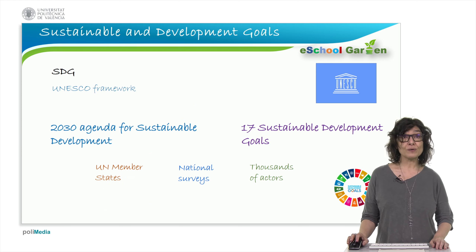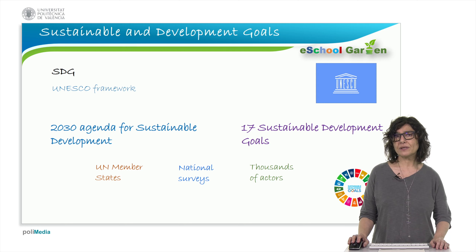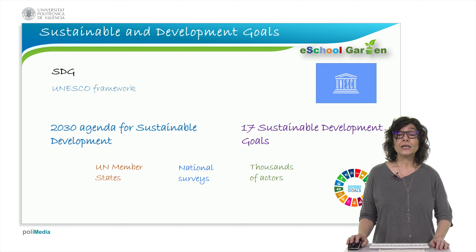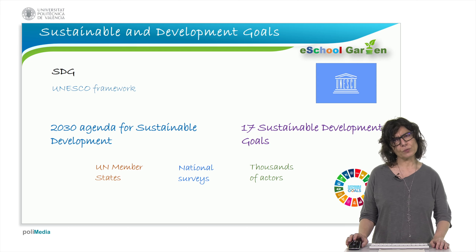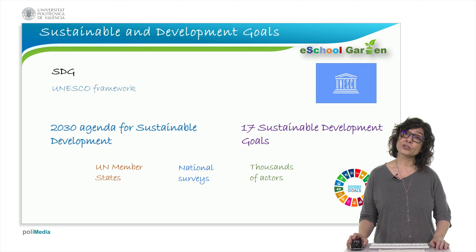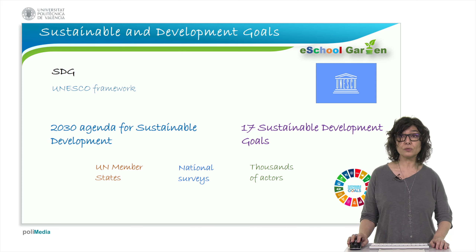In 2015, the United Nations General Assembly adopted the 2030 sustainable development agenda. It was produced following the United Nations conference on sustainable development in Rio de Janeiro in 2012. This was a three-year process involving United Nations member states and engaging millions of people and thousands of stakeholders all over the world.